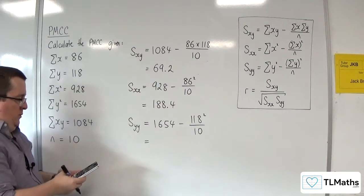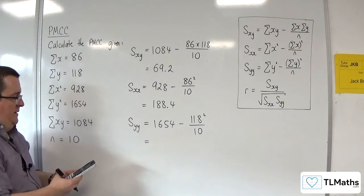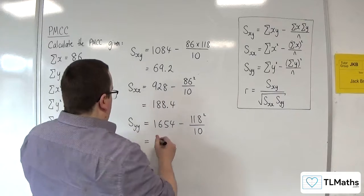So 1654 take away 118 squared divided by 10 gets us 261.6.